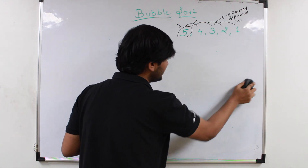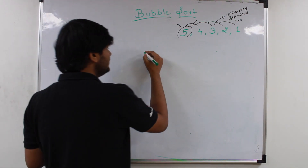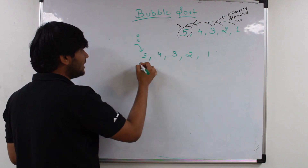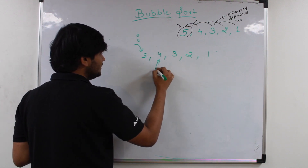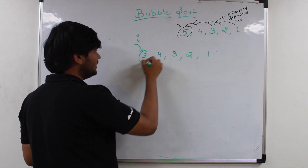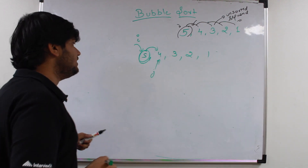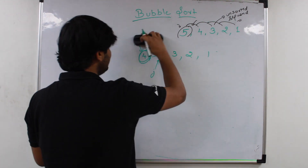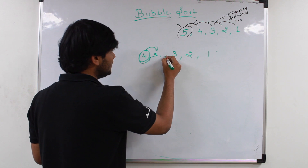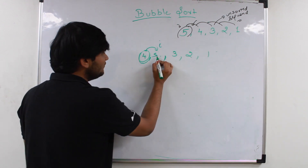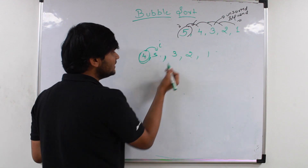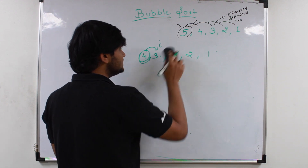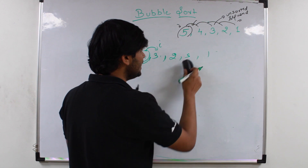Suppose the array given to you is 5, 4, 3, 2, 1. Here you can see that this array is arranged in descending order. At each iteration, we will just keep a tracker i. We will ensure that if the current element which i is pointing is greater than the just next adjacent element, then we will just swap these two elements. So here 5 and 4 will be swapped — 4 will come here, 5 will come here. Now i is pointing to 5, and 5 is greater than 3, so again we will just swap. So this is 3 and this is 5. Again 5 will be compared with 2 and it will again be swapped — 2 will come here, 5 will come here. After that 5 will be swapped with 1.